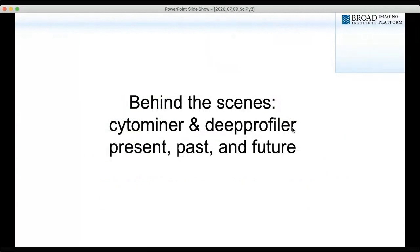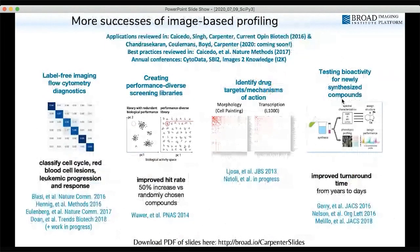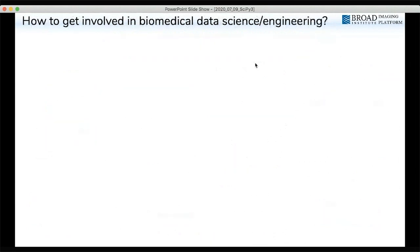Behind the scenes on these profiling projects, we have computational libraries — Cytominer and DeepProfiler — not intended for biologists without computational skills. The goal is to go from images to downstream analyses involving normalization, batch effect correction, and related steps, using R, Python, and a deep learning-based profiling strategy that goes straight from raw images to single-cell level relationships. There are also many conferences that may interest you if this field is of interest. Slides are available at broad.io/carpenter-slides.